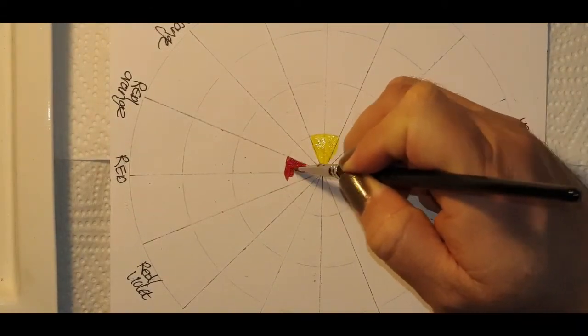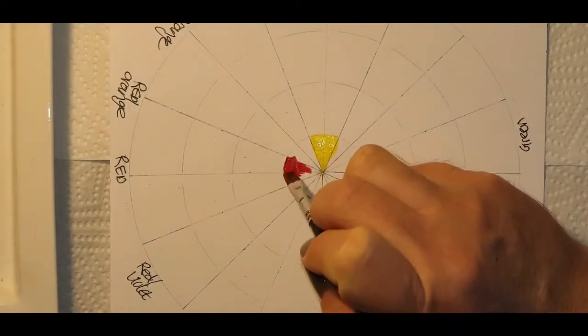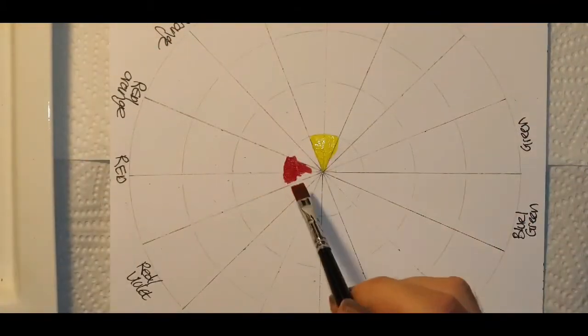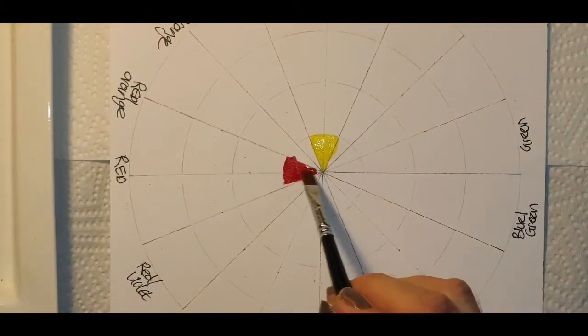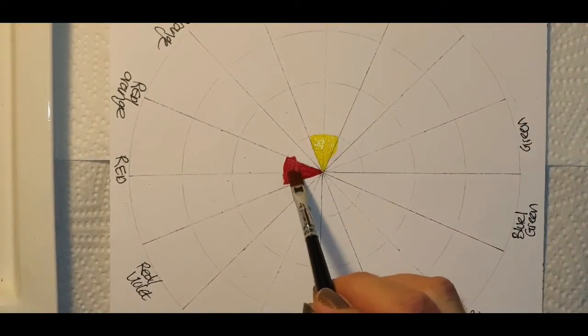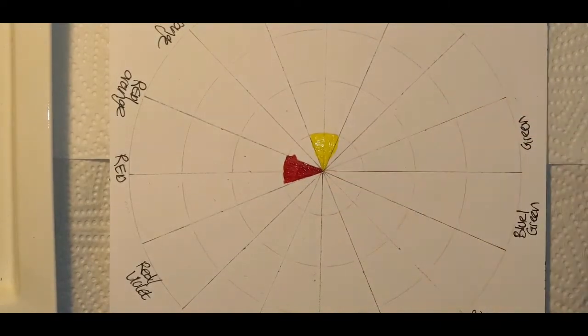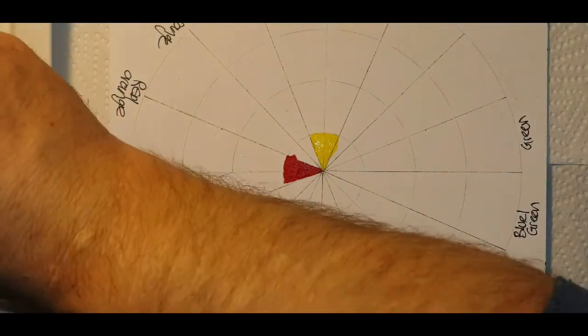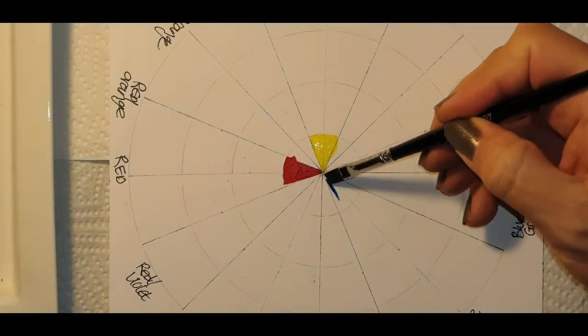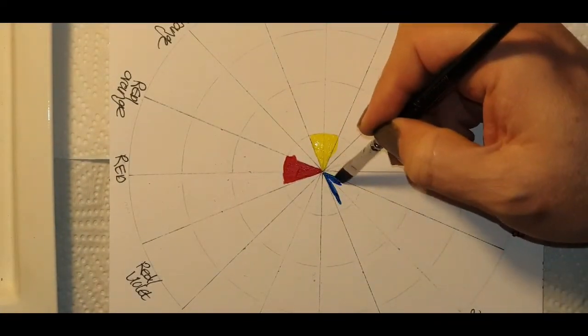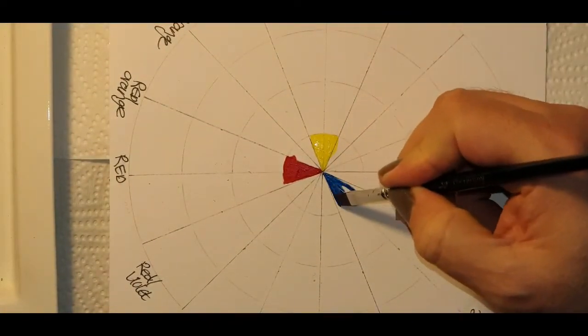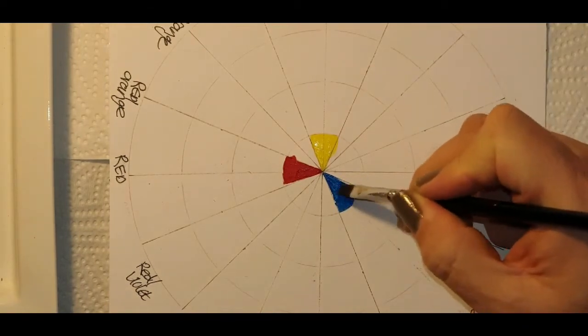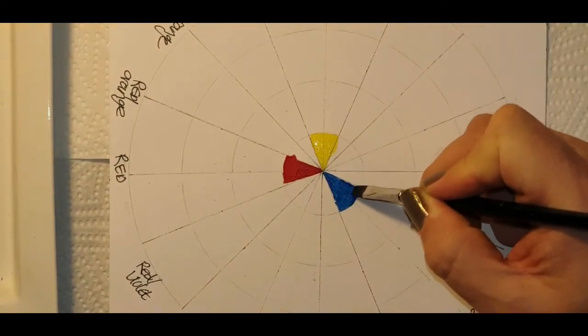Next I'm going to be doing a red, it's also a primary color, and I'm trying to represent it in this little pie shape here in its most saturated form. And then lastly I'm going to be doing blue in its most saturated form. So these are the three primary colors.